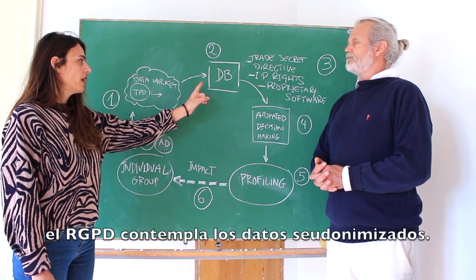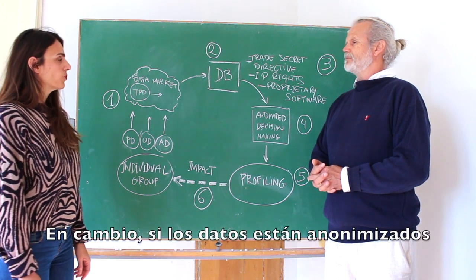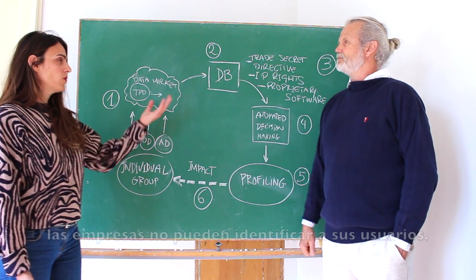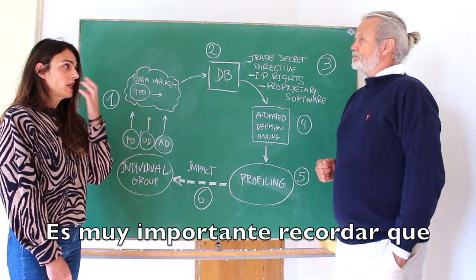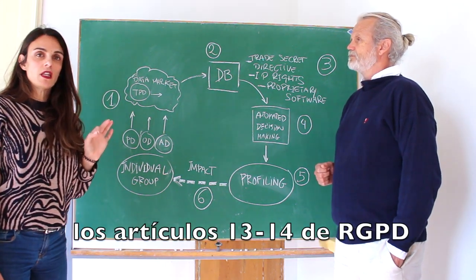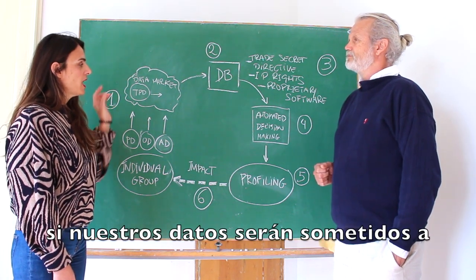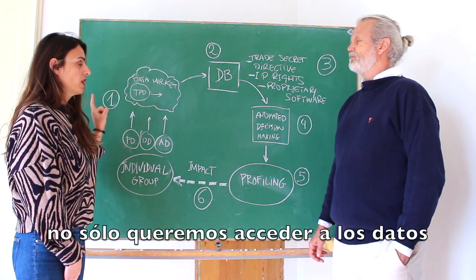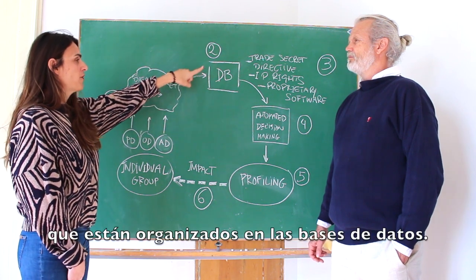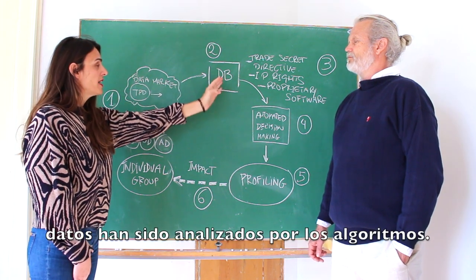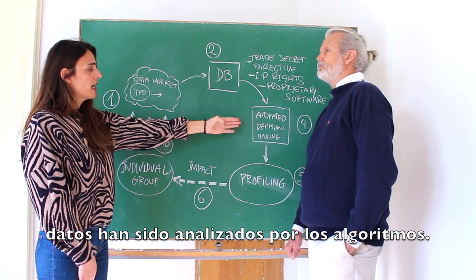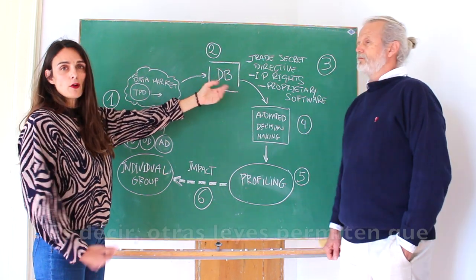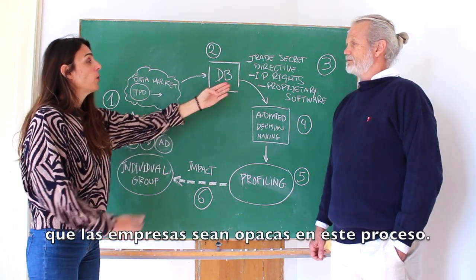That's the reason why the GDPR contemplates pseudonymization in the law. Once data is anonymized, the GDPR does not apply anymore, because companies don't know who you are — they cannot identify you. It's important to say that GDPR articles 13 and 14 give us the right to know if there is any automated decision-making, including profiling. So when we want to access our information, we don't only want to access the data in the databases — we want to access how the data are treated and how algorithms are treating our information. But trade secrets directives, IP rights, and proprietary software mean other kinds of laws are allowing companies to be opaque in this process.